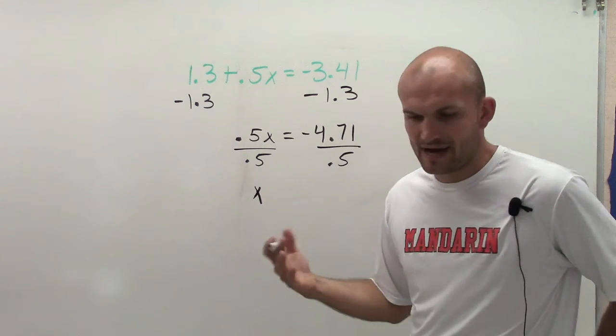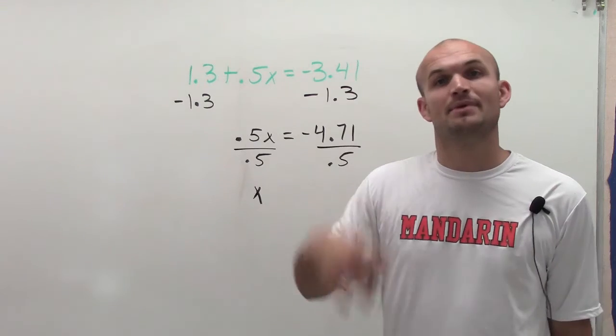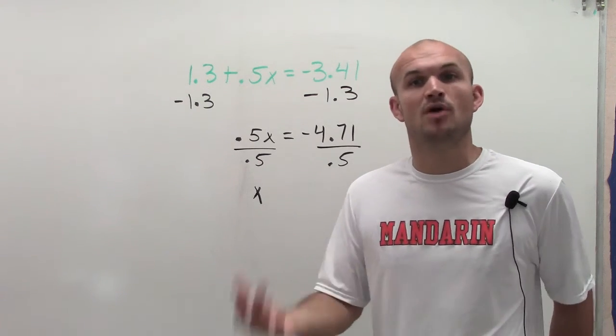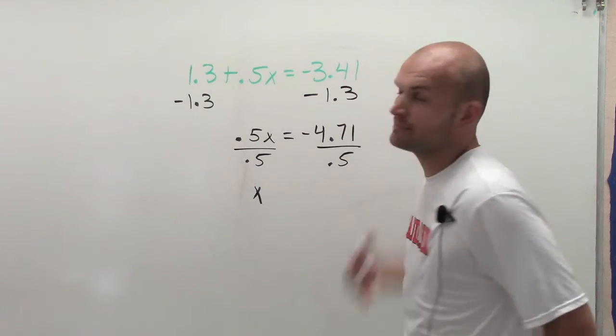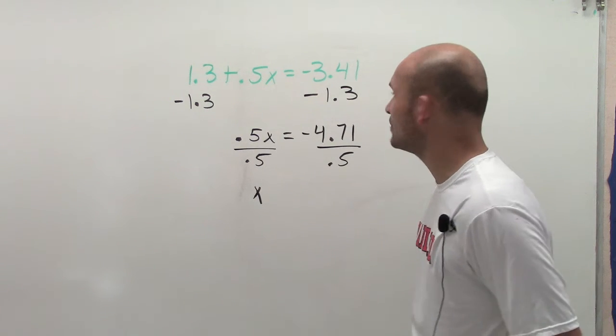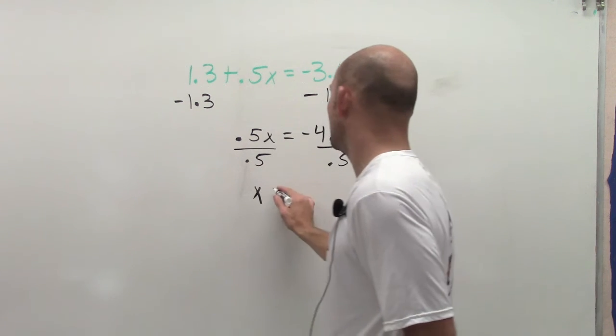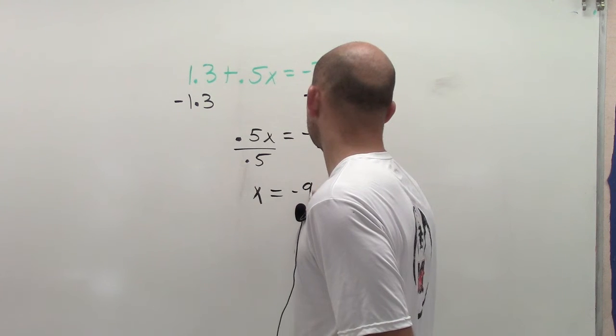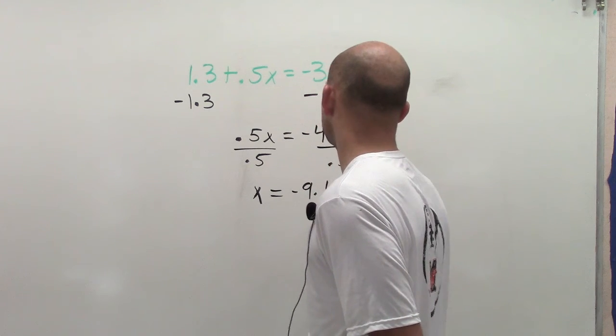But remember, 0.5 is the same thing as 1 half, right? And dividing by 1 half is equivalent to multiplying by 2. So really what I'm doing is just multiplying negative 4.71 times 2. So that's going to leave me with negative 9.42.